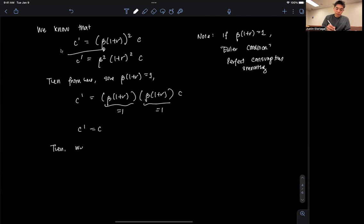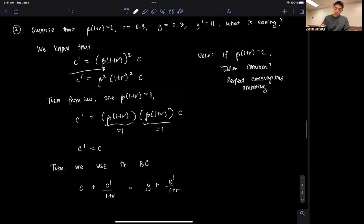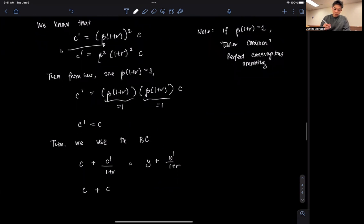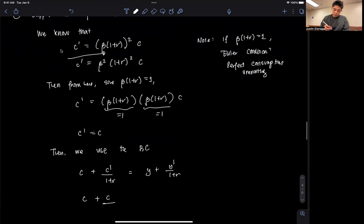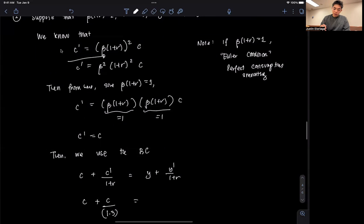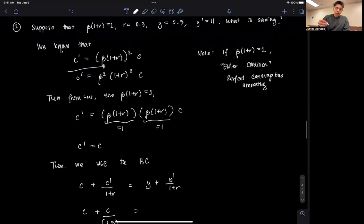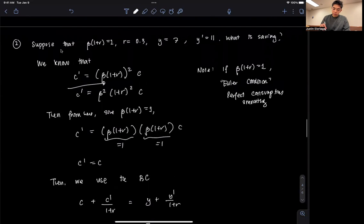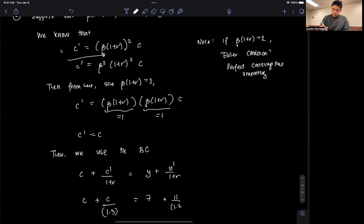Then we use the intertemporal budget constraint. Recall that C plus C prime over 1 plus r equals Y plus Y prime over 1 plus r. We have C as an unknown, and we also have C prime, which is an unknown, but we know that it's equal to C, divided by 1 plus r, so that's divided by 1.3. Equal to Y, Y here is given as, sorry, this is not 0.7, this is 7. 7 plus Y prime is 11, divided by 1.3.